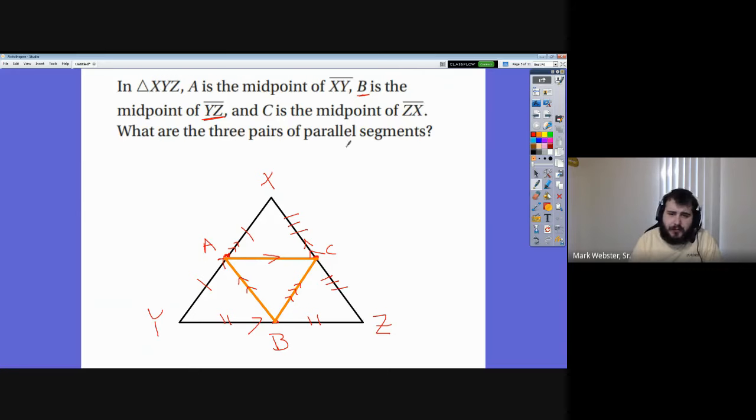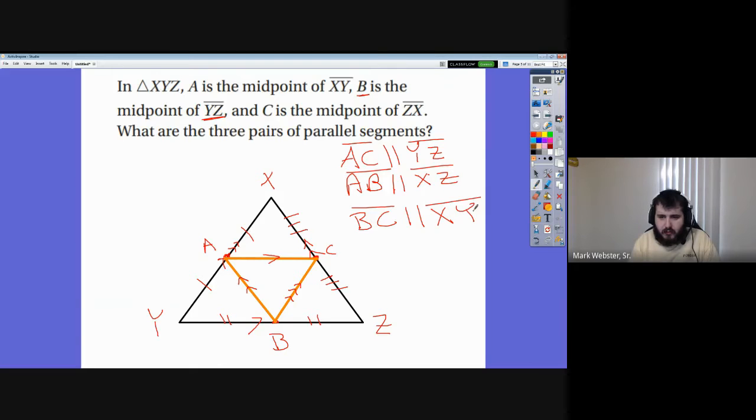So the three pairs of parallel segments, we've got AC which is parallel to YZ, we've got AB which is parallel to XZ, and we've got BC which is parallel to XY. Ta-da! That's all there is.